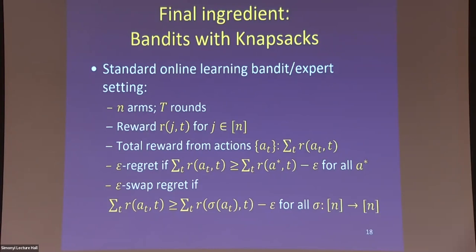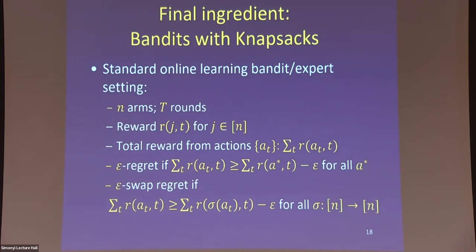Bandits with knapsacks extends the standard bandit model. In the standard bandit or expert setting, there are n arms and T rounds; you pull arm j at time t and get reward r_{jt}. You have epsilon regret if the best action in hindsight would have gotten you at most epsilon more than you actually attained. Epsilon swap regret is the same except instead of for all actions you consider for all permutations — still attainable. You can get to whatever is information-theoretically optimal; for example predicting a sequence of coins competing with two strategies gives regret of order √T.